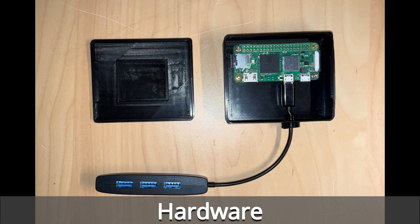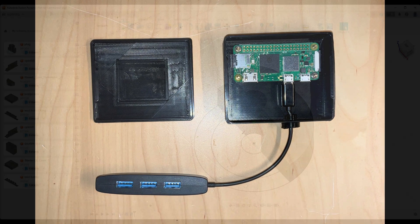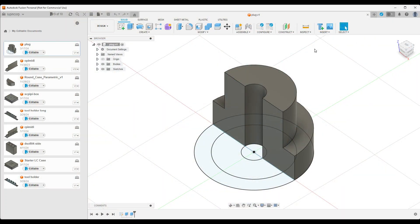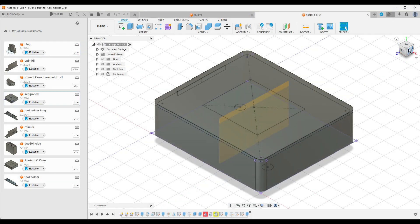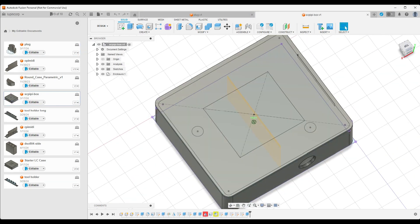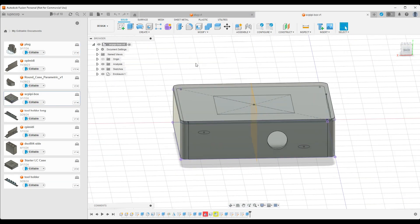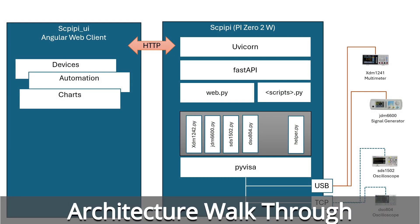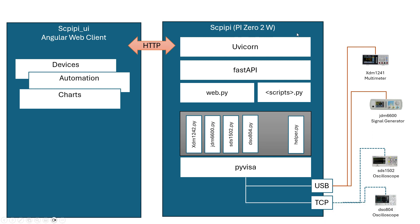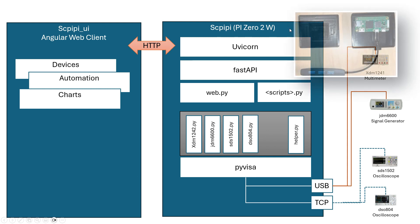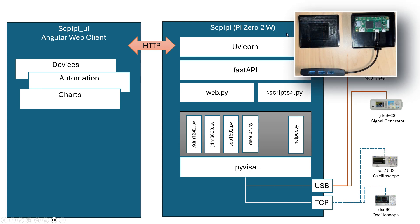The hardware side of Skippy Pi is pretty easy — it's just a Raspberry Pi Zero W and a USB hub. I did some 3D prints of a box and a way to run the wire through the box. Let's have a look at the architecture. I've got this block diagram to help — the architecture is basically a client-server application. The server part is running on a Pi Zero 2W device, and the client side is an Angular web client — I'm calling that Skippy Pi UI.